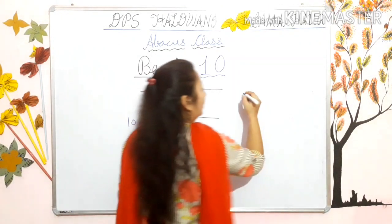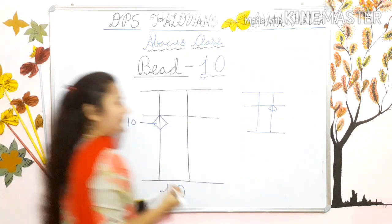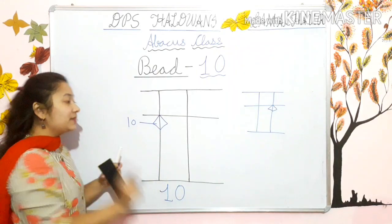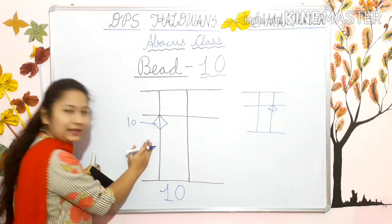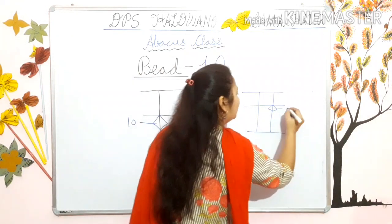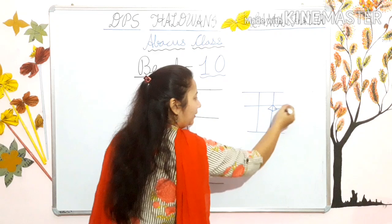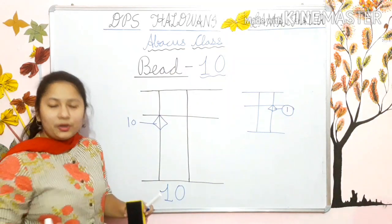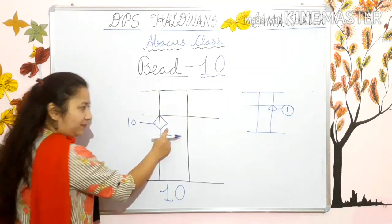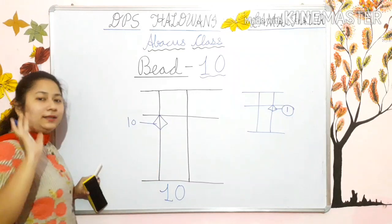Now students listen. If you draw the same structure here, see — this is also one bead, and this is also one bead, but there is a difference. This bead is in the second line — yeh second line mein hai. But this bead is in the first line — yeh first line mein hai. So this is bead one. Agar bead first line mein hogi, toh woh one hogi. This you have studied also and drawn many times. If the bead will be in the second line, then it will be bead ten. Iski value hai bead ten.